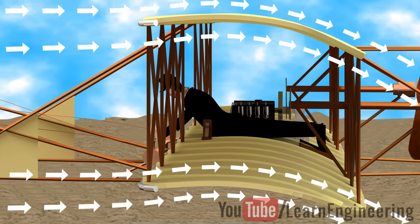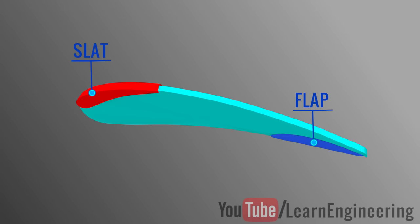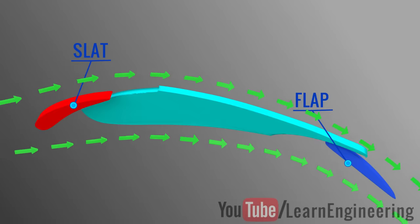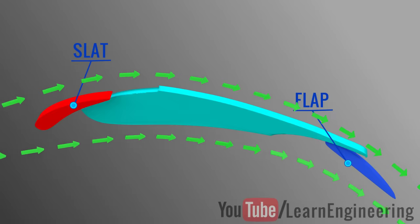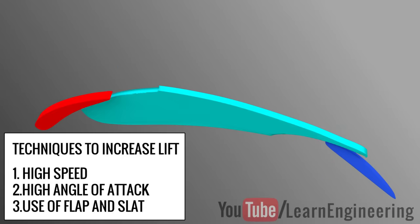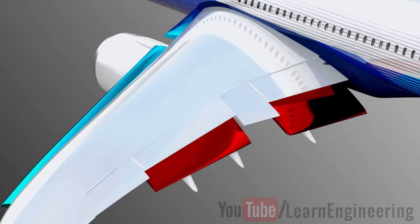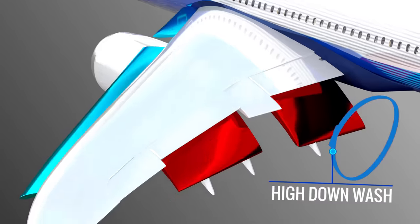One more idea to increase the lift force is by altering the airfoil shape. The alteration in shape will definitely increase the downwash and the wing area, hence giving greater lift. In short, there are three techniques to increase the lift of an airfoil. When we apply this knowledge to the airplane and activate the flaps and slats, it increases the downwash and increases the lift.